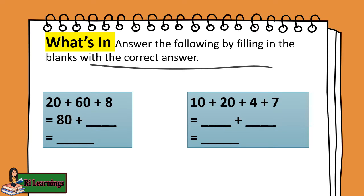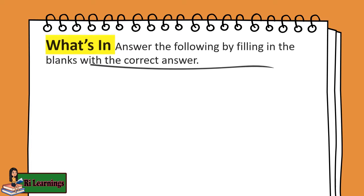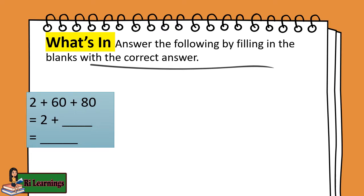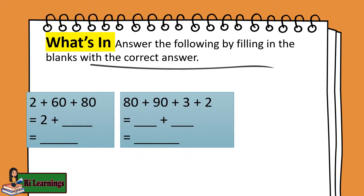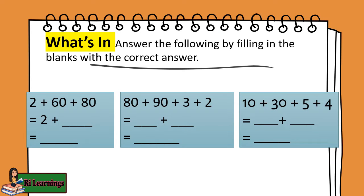10 plus 20 plus 4 plus 7 equals blank plus blank, equals blank. Also, 10 plus 30 plus 5 plus 4 equals blank plus blank.